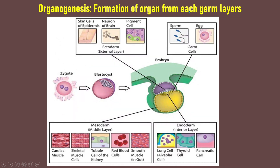Organogenesis is the formation of organs from each germ layer. From zygote to blastocyst and then gastrulation produces the gastrula — a 3-layered embryo. The 3 germ layers are ectoderm (external layer), mesoderm (middle layer), and endoderm (interior layer). Ectoderm develops into skin cells of epidermis, neurons of the brain, and pigment cells. Mesoderm develops into cardiac muscle, skeletal muscle, tubule cells of the kidney, red blood cells, and smooth muscles of the gut. Endoderm develops into lung cells (alveolar cells), thyroid cells, and pancreatic cells. Some germ cells remain inside the reproductive organs — in the testis or ovary — where they later develop into sperm or eggs.